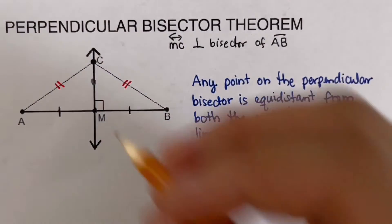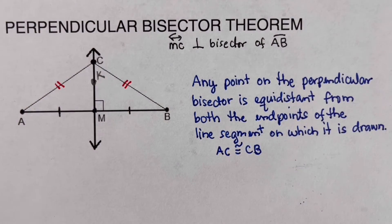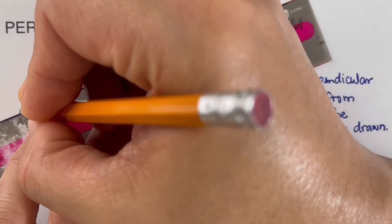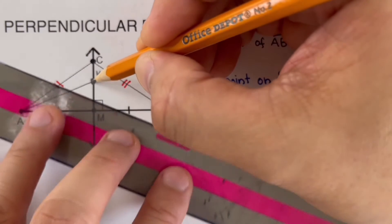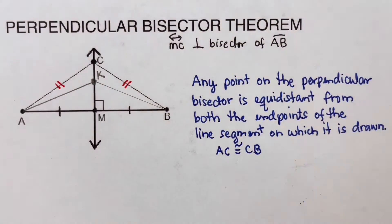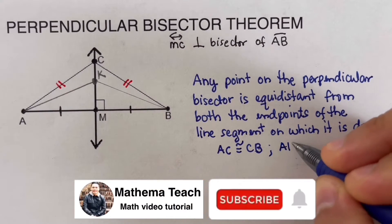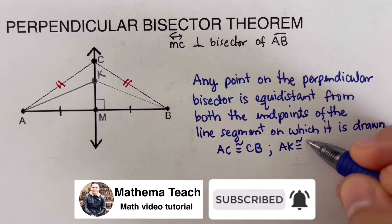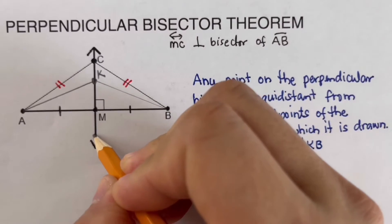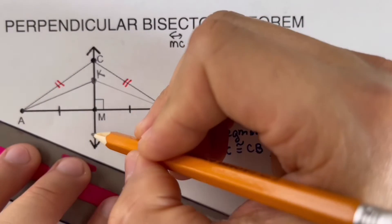Let's place another point called K on the bisector. We can draw a line segment from K to A and from K to B, and those two segments are equidistant — so AK is congruent to KB.